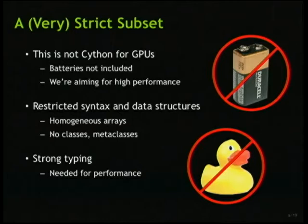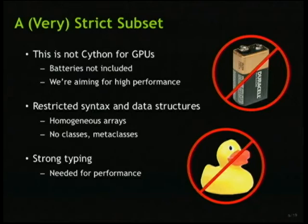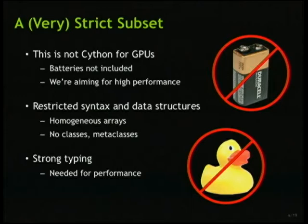Copperhead is a very strict subset of Python. This is not Cython for GPUs. Batteries are not included. We are aiming for really high performance. As Travis said, one of the key problems in getting Python code to work well on actual hardware is type information. We deal with that problem with type inference. We have restricted syntax, restricted data structures. Our arrays need to be homogeneous, so we use NumPy arrays. We don't allow classes and metaclasses. But because we don't allow that, we get strong typing, and that gives us good performance. And it's an embedded model, so you can use all of your normal Python goodness for the rest of your code. It's just the stuff you want to go fast that needs to conform to this restricted subset.